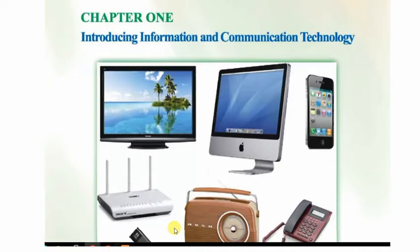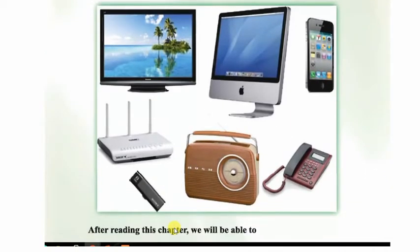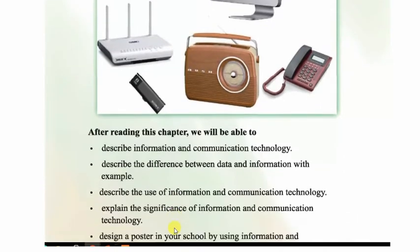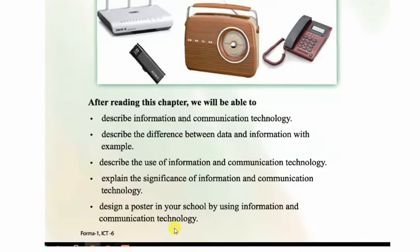We can see some pictures: smartphone, desktop computer, modem, telephone, radio. These are electronics media or technology. After reading this chapter we will be able to: describe information and communication technology, describe the difference between data and information with examples, describe the use of ICT, explain the significance of information and communication technology, and design a poster in your school using ICT.